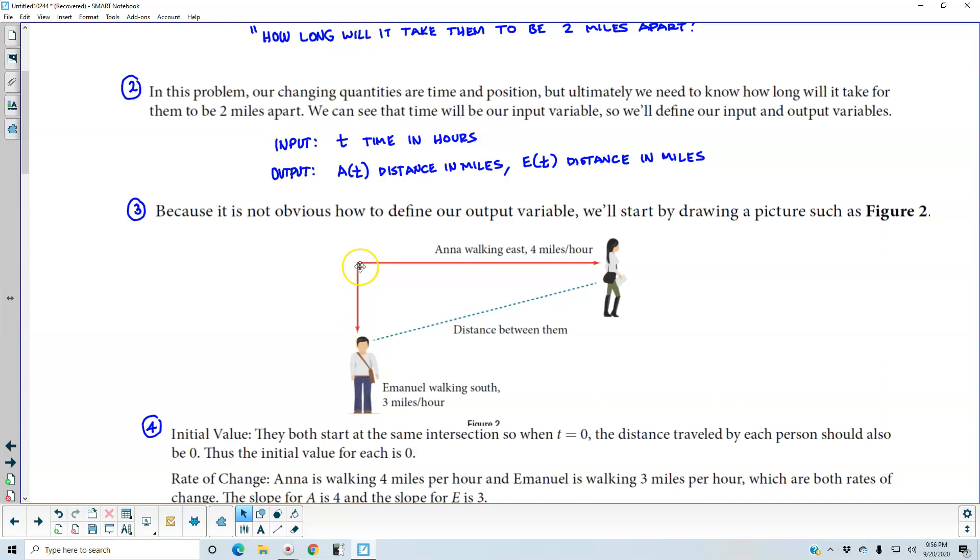And then Anna is walking east 4 miles per hour. So here are our two segments. And if we connect that with that dotted line, that is the distance between them.